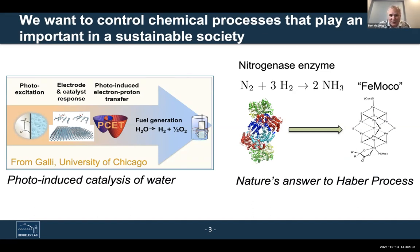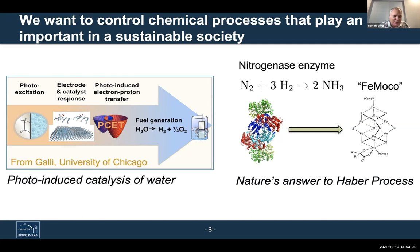If there are processes we want to control relevant to a sustainable energy future, what are those? For example, on the left, you have photo-induced catalysis of water. You might think that seems like a relatively easy problem, but most of these processes happen at very complex interfaces. They often have very complex interactions and charge transfer processes that drive, for example, hydrogen production. Describing these with very simplistic models will not get you the right answer for the right reason.